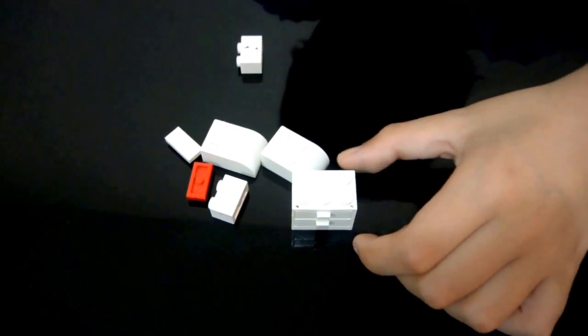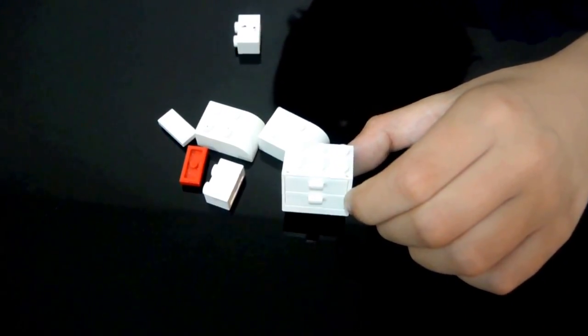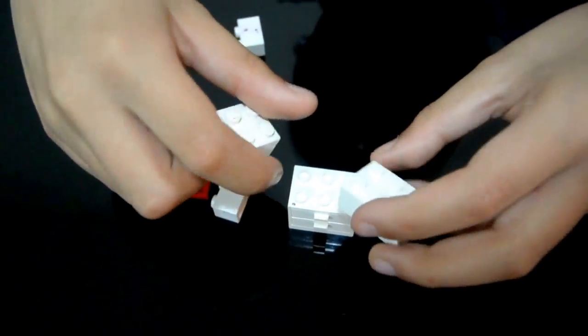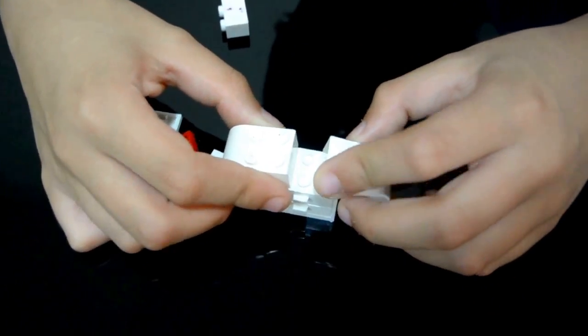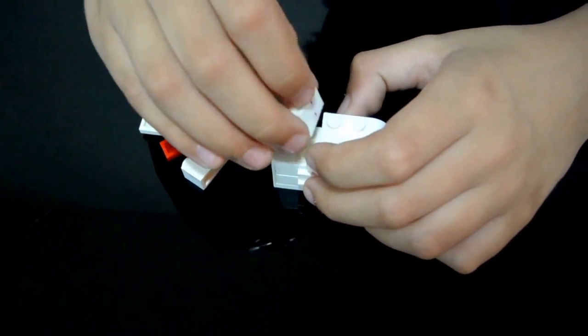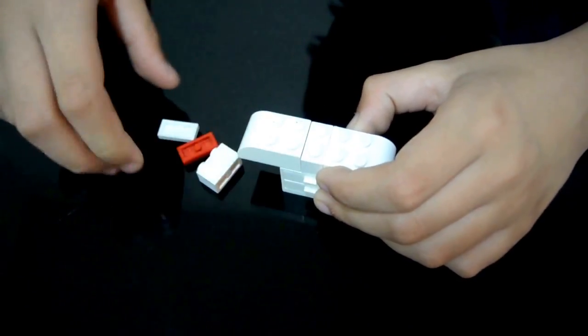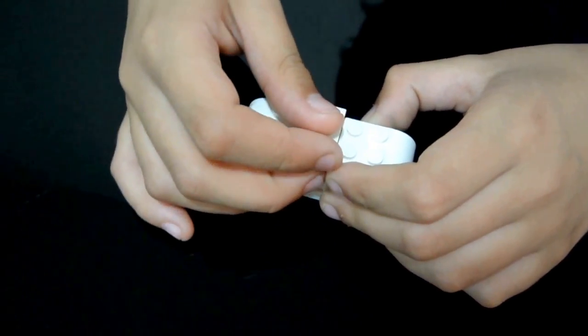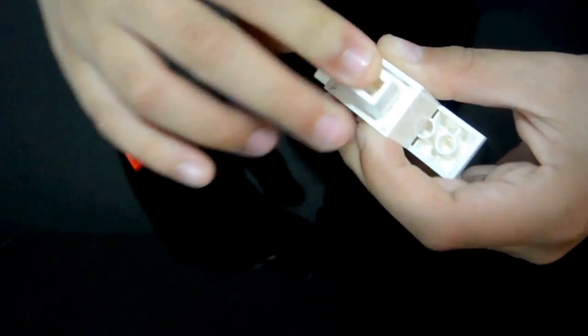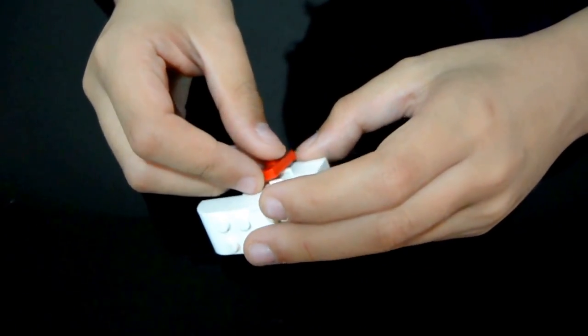For the torso, get a 2x3 drawer piece and put two of these 2x3 curved pieces here and here. Put a 1x2 here and put a jumper plate. Put a 1x2 here and put a jumper plate right here.